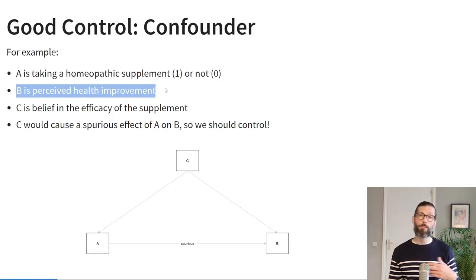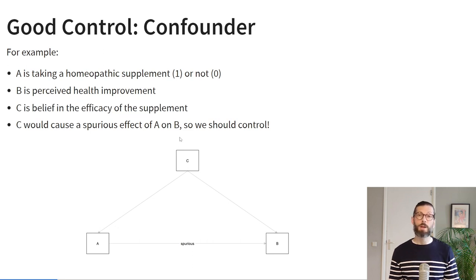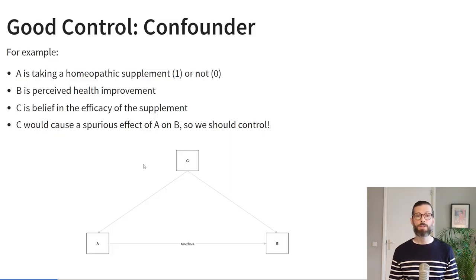Let's make this more tangible. Imagine variable A is whether or not people took a homeopathic supplement — a natural experiment where some people volunteered to take it and others did not. Variable B is perceived health improvement, and variable C is belief in the efficacy of the supplement. Because belief in efficacy is likely to both cause self-selection into the supplement group and improved feelings of well-being, variable C will create a spurious relationship between A and B. So if you want to know the causal effect of A on B, you must control for the confounder C. In this case, C is a good control.